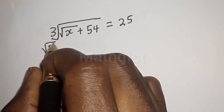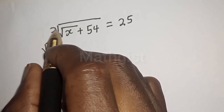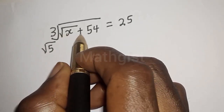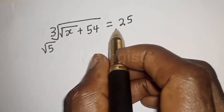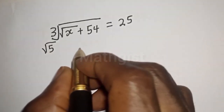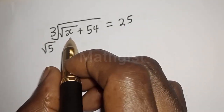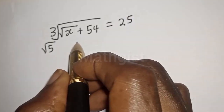Square root of 5 raised to the power of cube root of square root of s plus 54 is equal to 25. Hi everyone, welcome to my class. In this class I want to find the value of s from this equation.